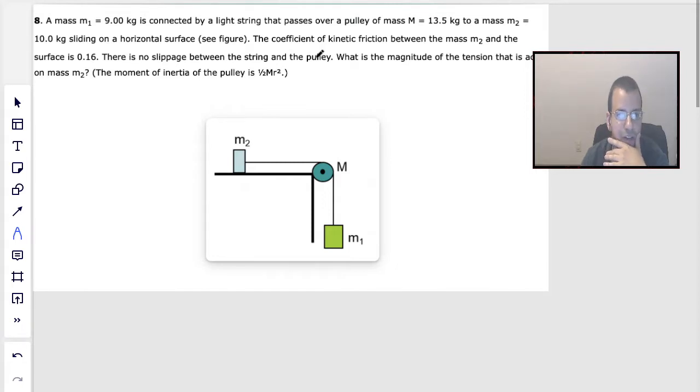Mass M2 sliding on a horizontal surface. Coefficient of kinetic friction is 0.16, so I'm going to assume things are moving. There's no slippage, so no slipping means x equals r theta, v equals r omega, a equals r alpha.